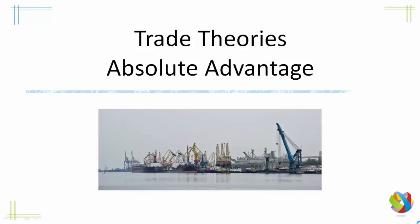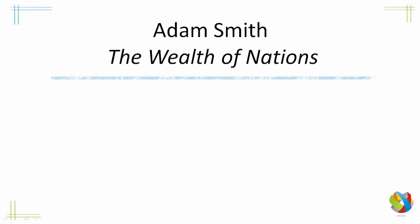Hello and welcome to this second video in a series on trade theories. In this one we're going to be looking at absolute advantage. This idea was first brought about by Adam Smith in his book The Wealth of Nations. The basic idea behind his theory was that nations would benefit if they specialised in exporting goods at which they had advantages in production, and importing goods in which other nations could produce things better and more cheaply.